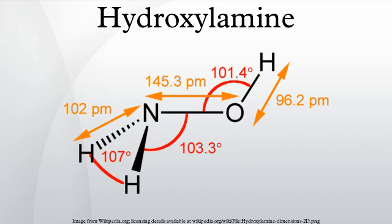Hydroxylamine can also be produced by the reduction of nitrous acid or potassium nitrite with bisulfite.